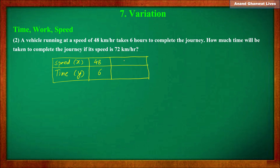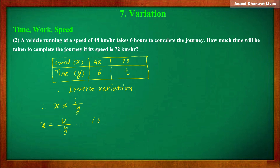We have to find the time if the speed is 72 km/h. Let us suppose that t hours is the time required. If the speed increases, the time required to complete the journey will be less. And if the speed is less, more time will be required. Therefore it is inverse variation. So x is inversely proportional to y, and x equals k upon y where k is a constant, giving us the equation x × y = k.